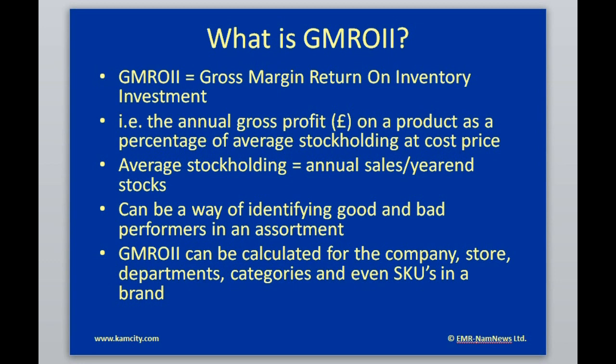In practice, you take the annual gross profit of a product — it can be a business, but essentially a product in pounds — as a percentage of the average stock holding at cost price, then multiply by 100. Average stock holding equals annual sales divided by year-end stocks. In retail, this is a particularly accurate measure of average stock holding, more than in any other business, because of the speed of rotation.